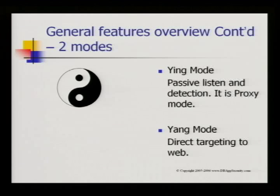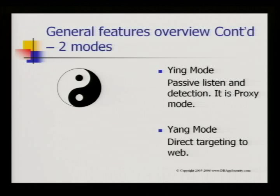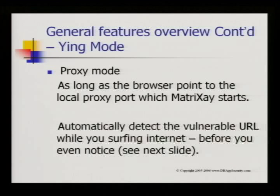I always like to use Taiji to describe the two modes of Matrix. One is the 'in' mode — basically passive: very silent and quiet, but it detects everything if acting as a proxy, because you're just browsing and suddenly there's a vulnerability report on the back-end. The 'yang' mode is what you already saw in the flash demo — direct targeting of the web with multi-threading. In proxy mode, as long as you browse through it, it may do everything.